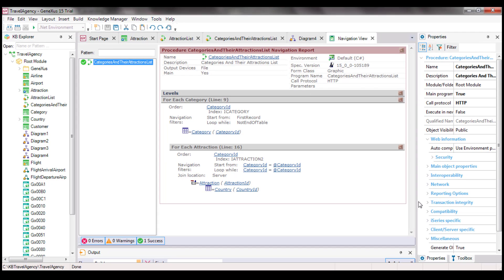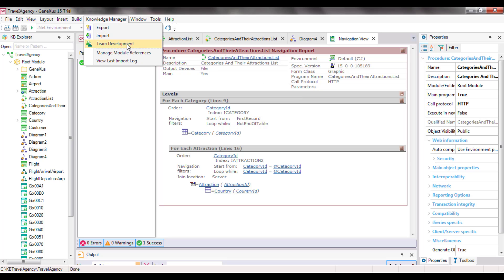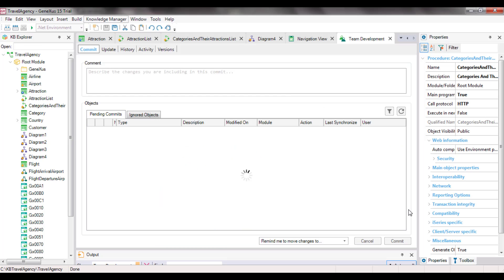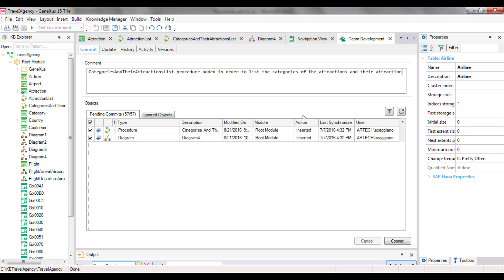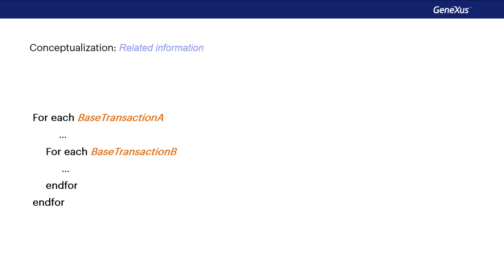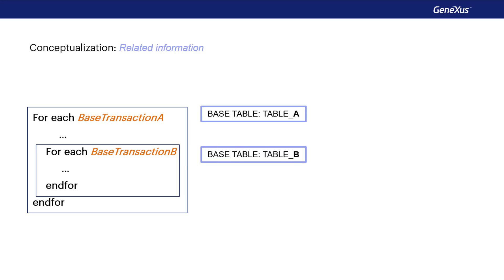We've seen how easy it is to obtain information and display it in a report, but procedures can do much more than that, as we will see later on. Lastly, we update the changes in GeneXus server. As a review, when we type nested forEach commands, GeneXus determines for every one of them the base table it will navigate and looks for any relationship between these base tables. If a relationship exists, as we've seen in the list shown in this video, it will apply an automatic filter to the records run through by the nested forEach command. This type of nested forEach commands where information is filtered according to a relationship criterion is called a join.